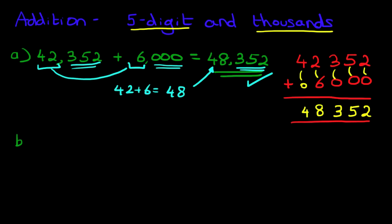Let's look at our second example. This one we're going to do with carrying. This time we have 69,435 plus 8,000. Let's do this in the horizontal format first.